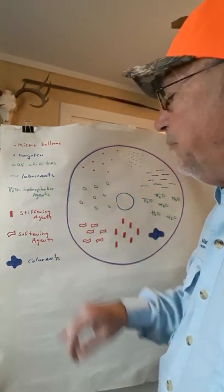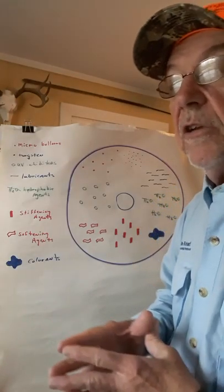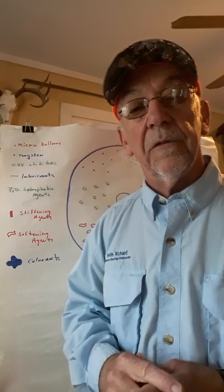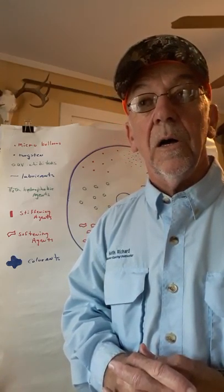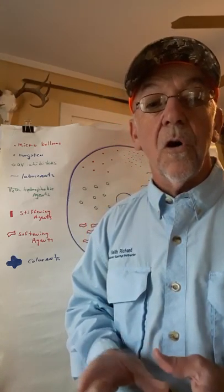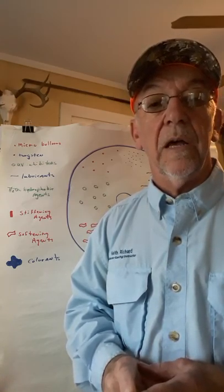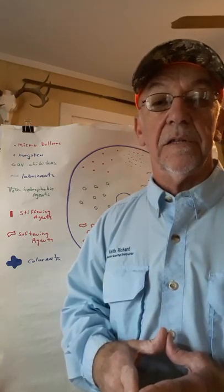They may put colorants in it. Typically your lighter colored fly lines, now this is not a hard fast rule, but typically your lighter colored fly lines are for floating lines and your darker like brown or black, your darker colored fly lines typically represent sinking fly lines.